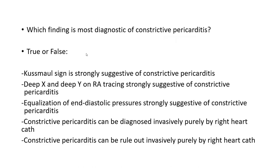I will start with some questions that will make you think and that I will answer later in the talk. Which finding on invasive hemodynamics is most diagnostic of constrictive pericarditis? True or false for each of the following five statements: Kussmaul sign is strongly suggestive of constrictive pericarditis. Deep X and deep Y on RA tracing are strongly suggestive. Equalization of end-diastolic pressures is strongly suggestive. Constrictive pericarditis can be diagnosed invasively purely by right heart cath. Constrictive pericarditis can be ruled out invasively purely by right heart cath.